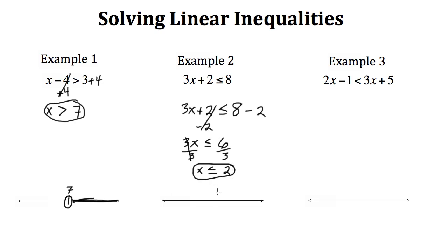To graph example 2 on a number line, we find where 2 is. Since x is less than or equal to 2, the dot at 2 is going to be a closed circle, because it can equal 2.